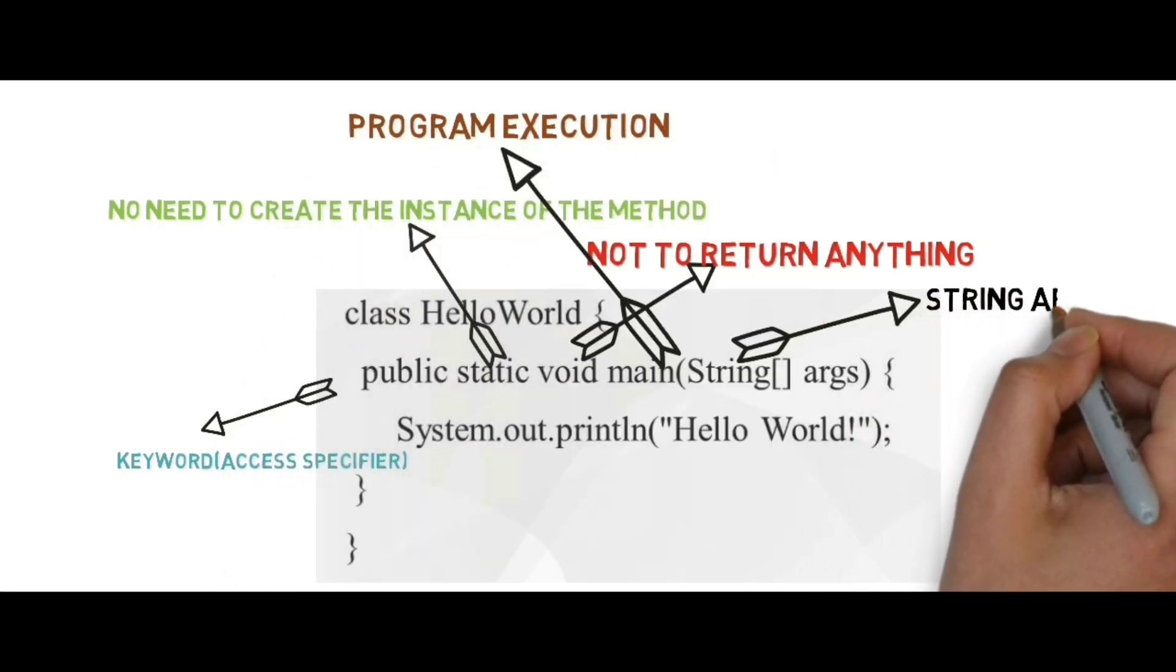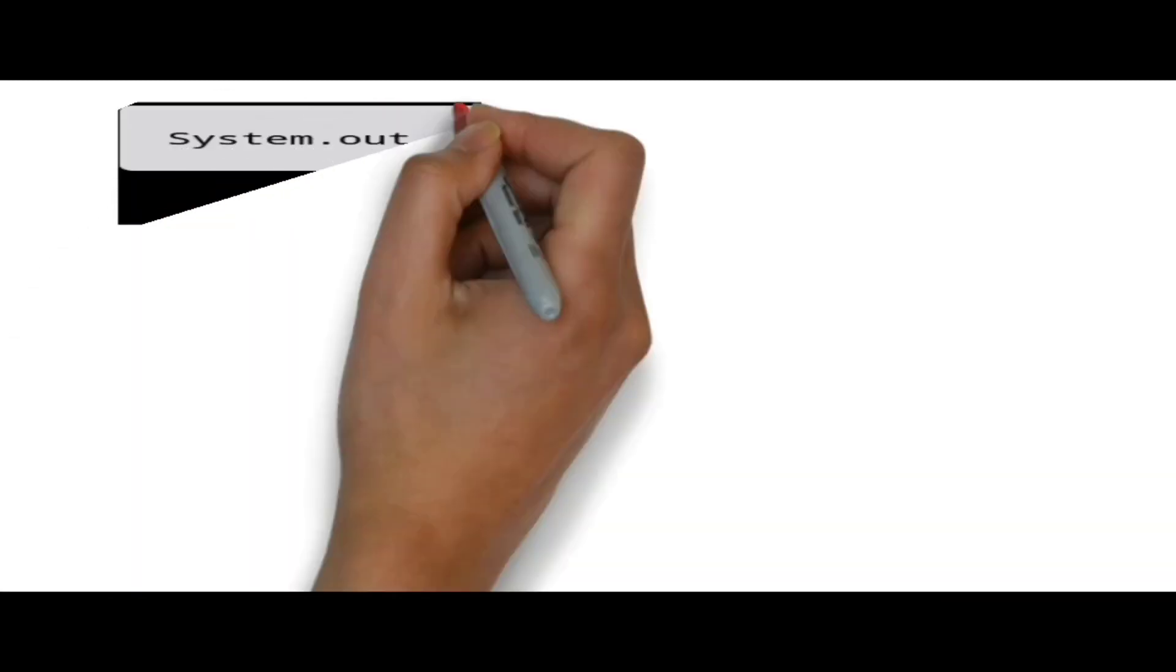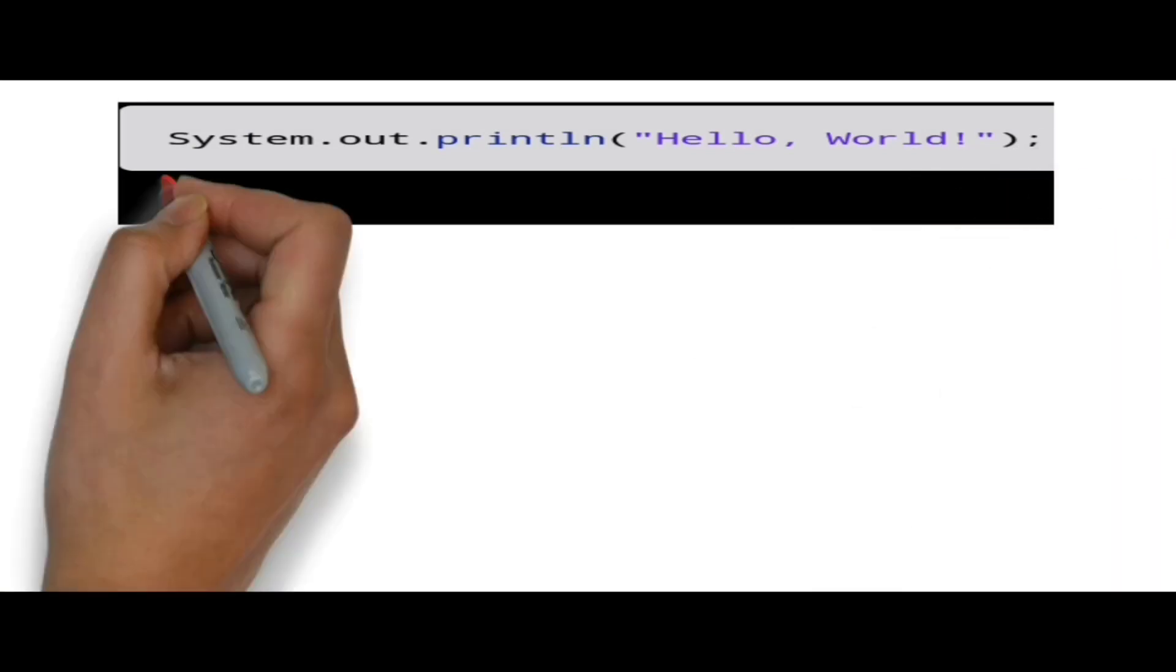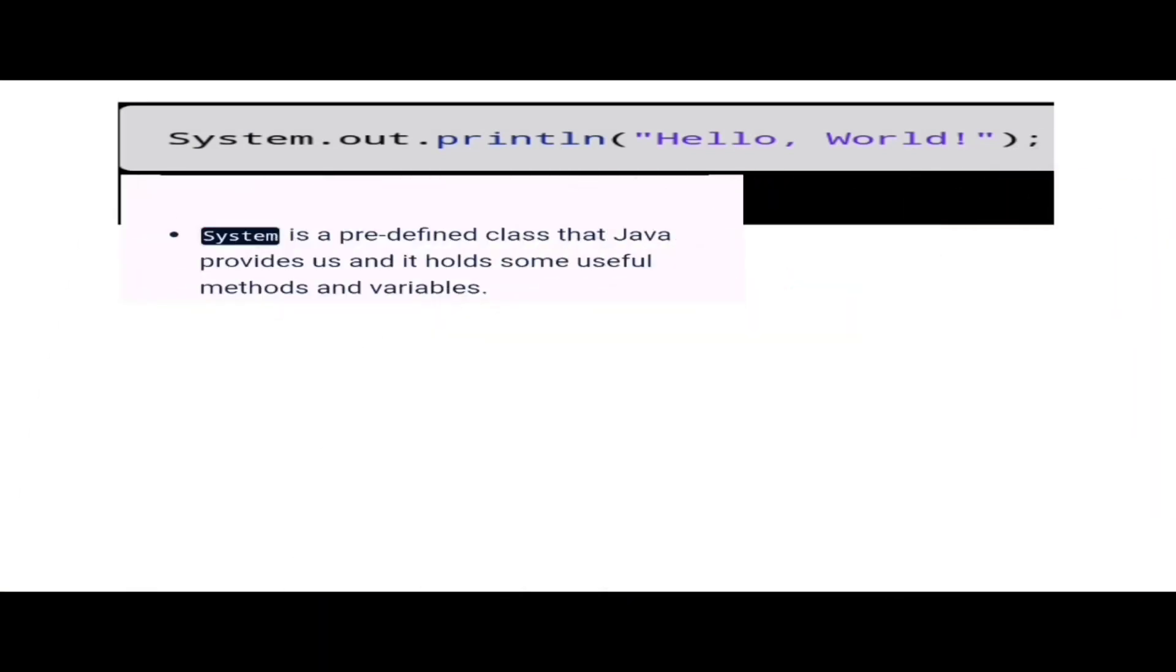The third line of our code is System.out.println. System is a predefined class that Java provides us. It holds some useful methods and variables.